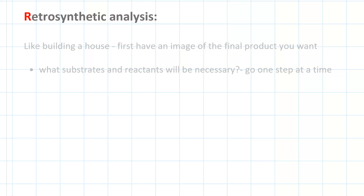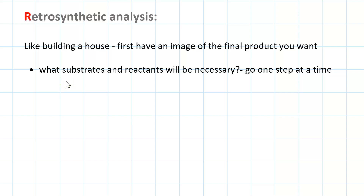Retrosynthetic analysis is working backwards to do chemical synthesis. Just as you would draw up plans before building a house, with chemical synthesis the first thing you want to do is have an image of the structure of the molecule you're trying to synthesize. Then it's a matter of identifying one bond in that product molecule and asking yourself, do I know how to make that bond? You combine multiple steps of this until you get back to your starting material.